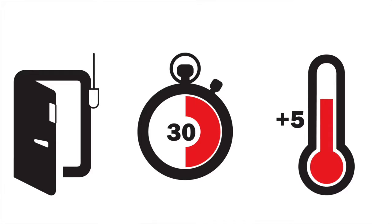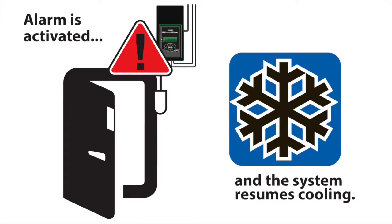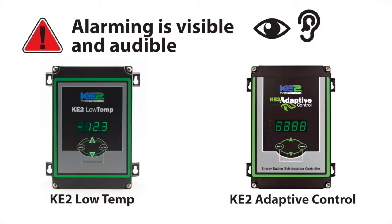The further benefit of the door switch is the ability to trigger an alarm. When the door alarm delay is exceeded — the default is 30 minutes — and the temperature in the space rises, an alarm is triggered. When the system goes into alarm, the system is turned back on to resume cooling to protect the perishable product.